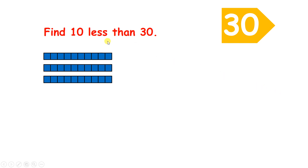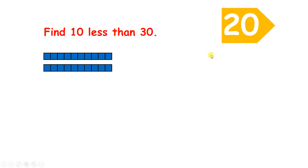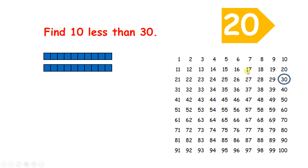Now find 10 less than 30. So if we take away 10 from 30, we have two 10s, or 20. And on a 100 square, to find 10 less, we move one place up.